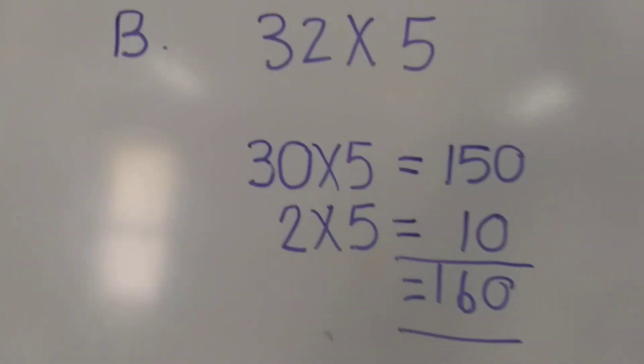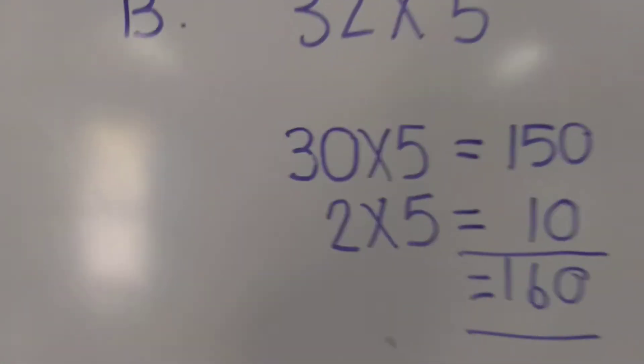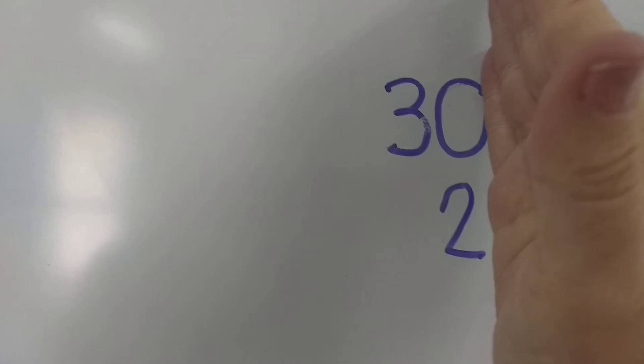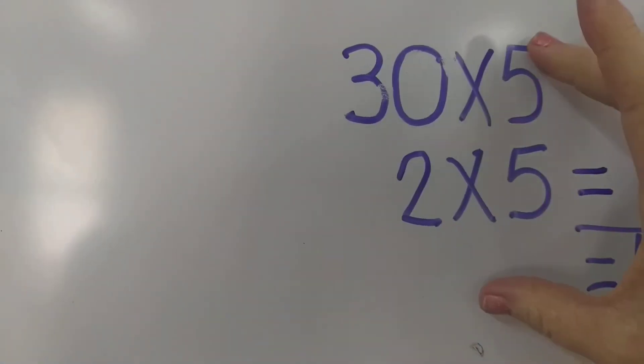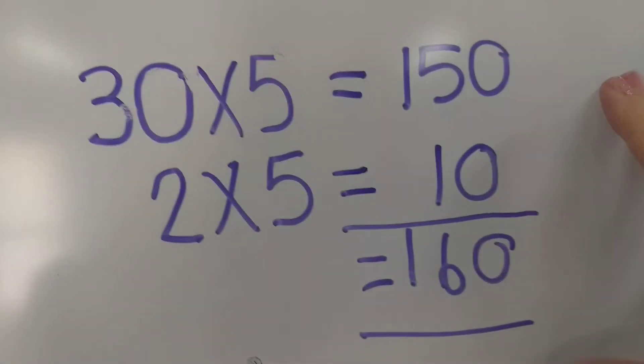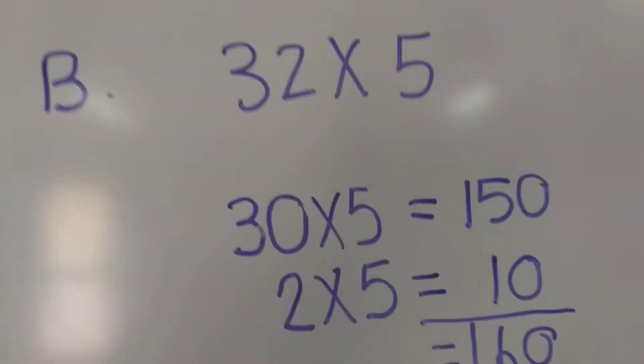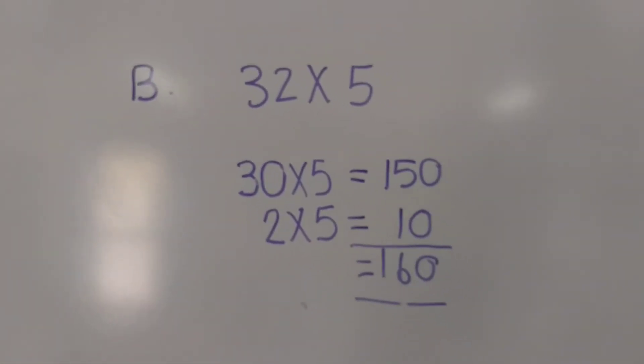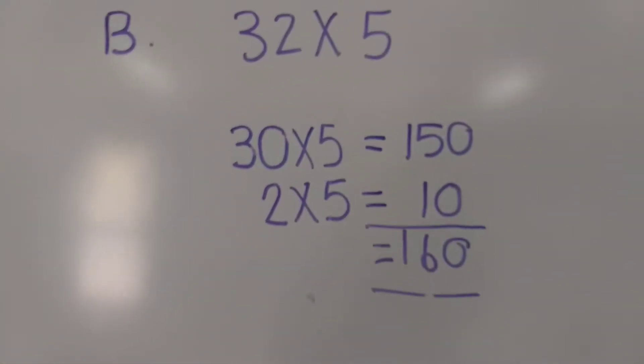So I would like you, when you're doing times table, set it out like this. Put the number, break it down underneath each other, then times, give an answer and give a final answer. So that is B. Let's try another one, D.